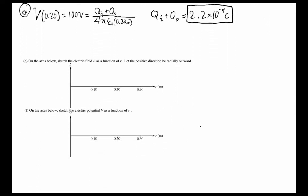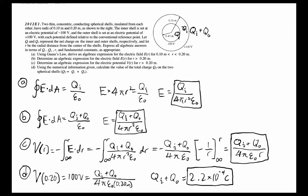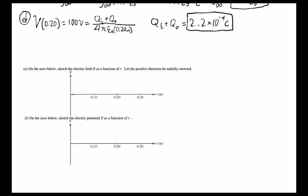For part e, we sketch the electric field E as a function of r, with the positive direction radially outward. From r equals 0 to r equals 0.1, applying Gauss's law shows there is no enclosed charge, so the right side is zero, meaning the electric field is zero. The electric field has a value of zero from 0 to 0.1 meters.